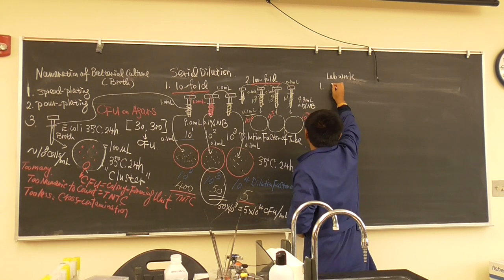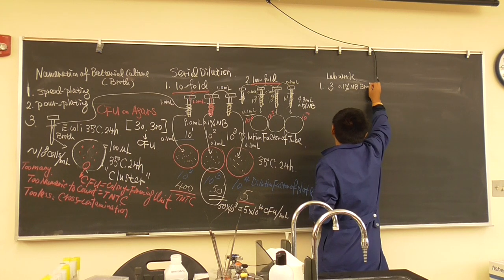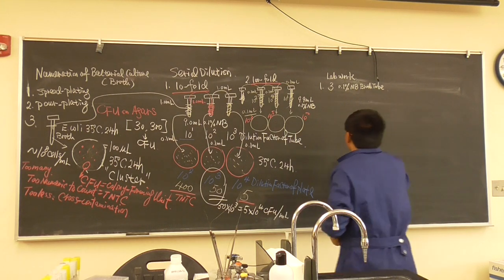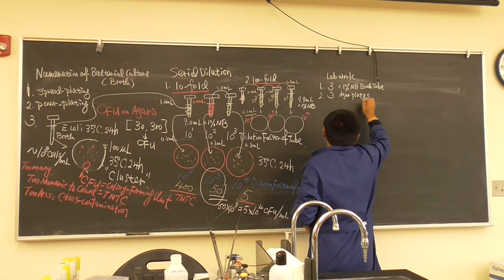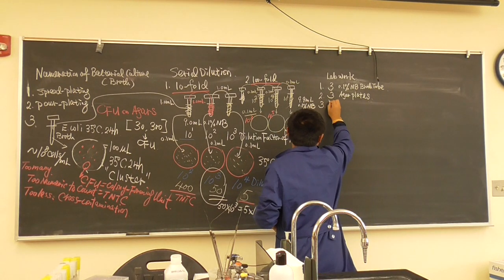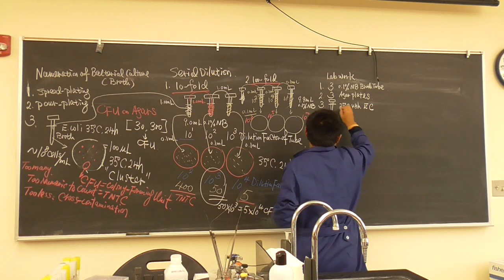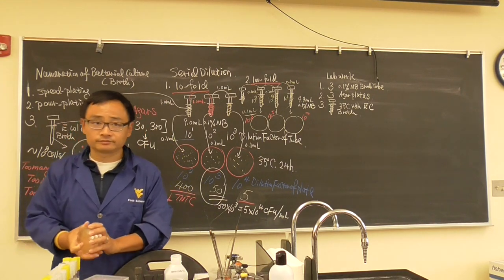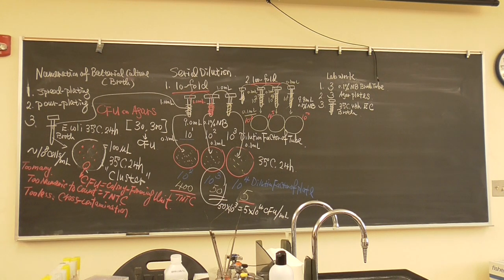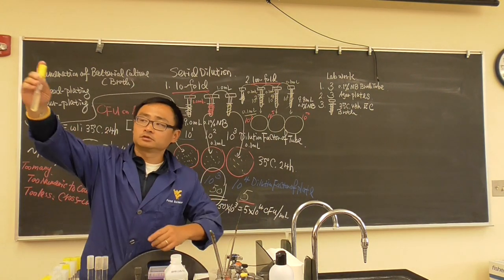Everybody will grab three tubes of 0.1% nutrient broth and three agar plates. Go to the front desk and get a 35 degrees Celsius, 24-hour-grown E. coli broth. So you have three plates and three dilution tubes for everybody.